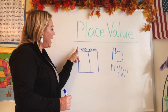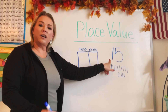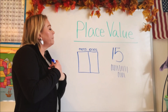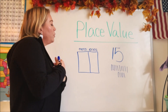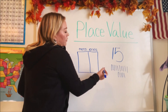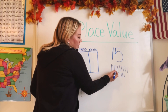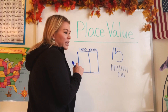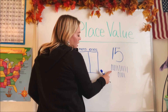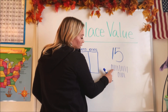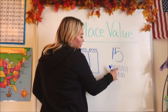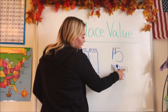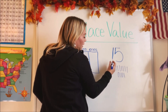Now how many tens are there in 15? If we were to count off 10 of these ones, how many would we get? Let's see: 1, 2, 3, 4, 5, 6, 7, 8, 9, 10.